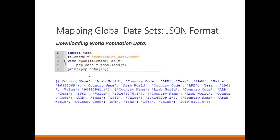We printed the first element of pop_data and you can see it is a list containing a dictionary. This dictionary has a key for the name of the country, a country code, a year, and a value representing the population at that year. One country is repeated multiple times for different years - here we have year equal to 1960, then 1961, 1962, 1963.